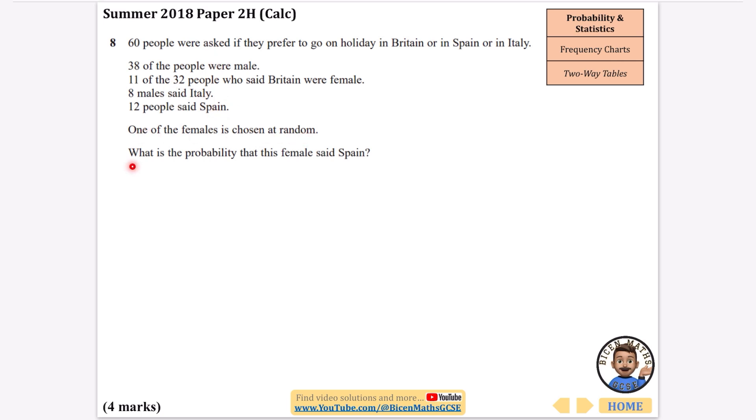It then says that one of the females is chosen at random, what's the probability this female said Spain? So I used to call these questions like the too much information questions, it's just like a lot going on. If there's too much information I would draw a two-way table.